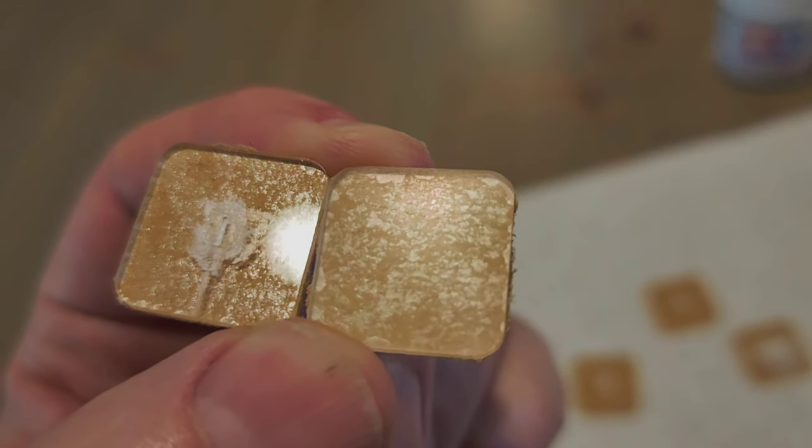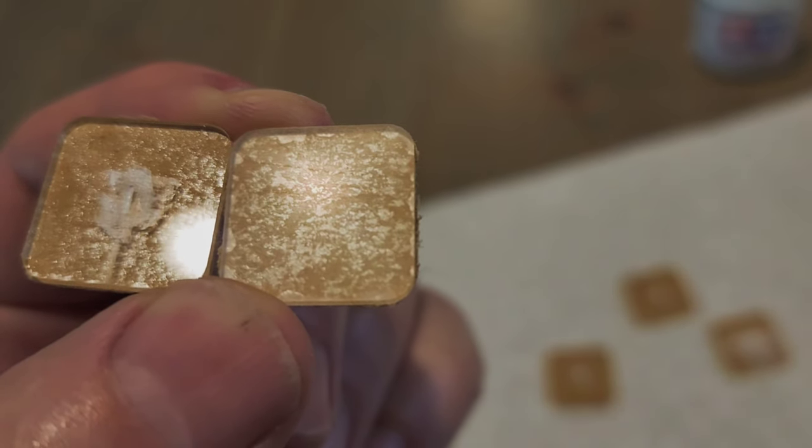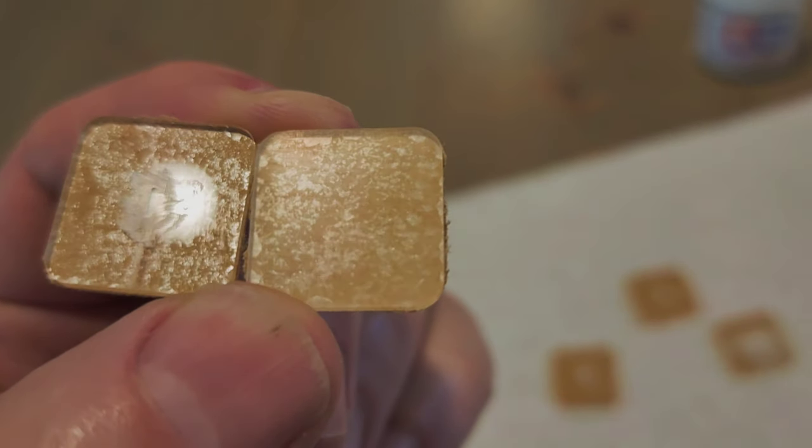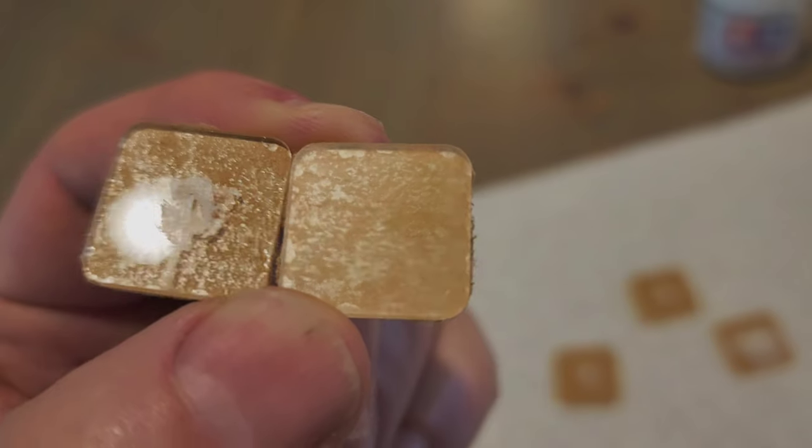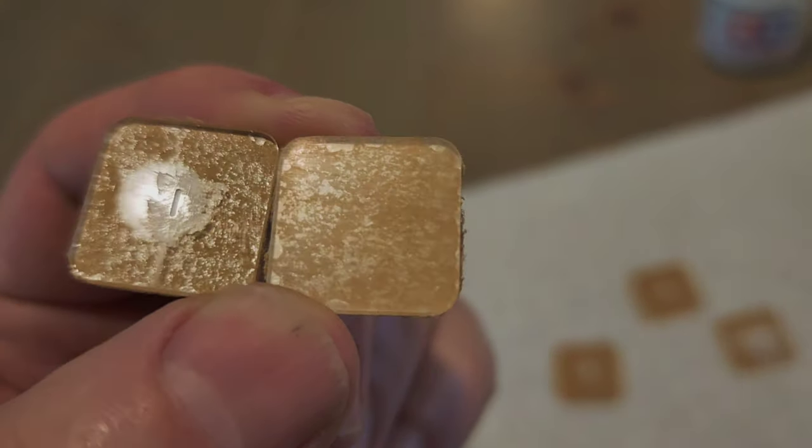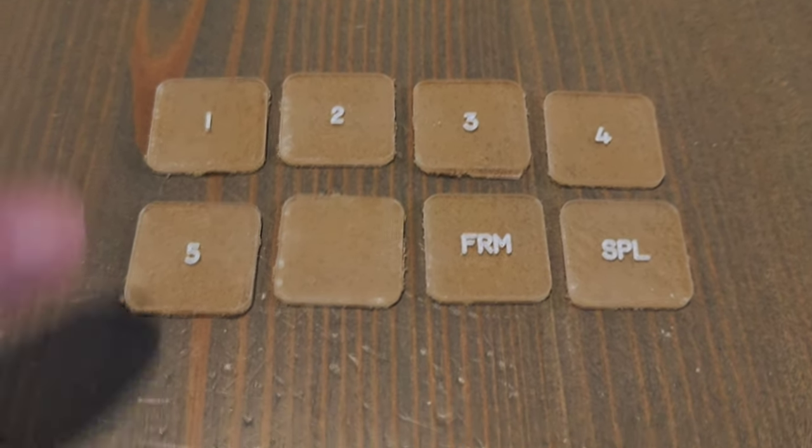You can see on the part on the left I haven't sanded it yet, you can see that reflection. Now compare it to the one on the right. That light overhead is very diffused and that's what I want for the lighting. I don't want to be able to look through this and see the LED bulb behind it.